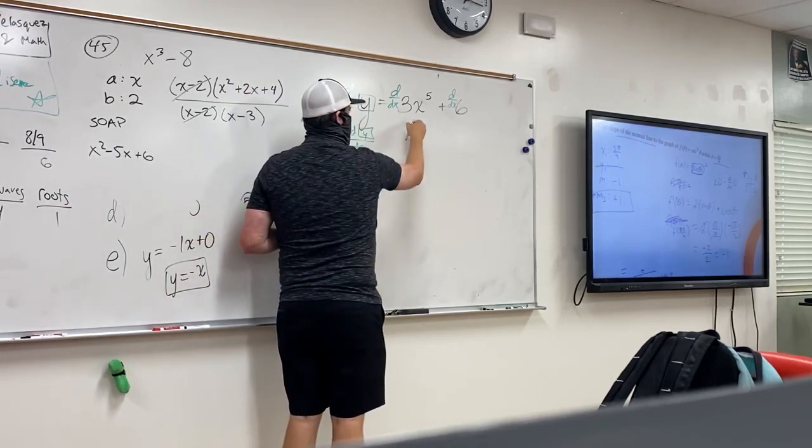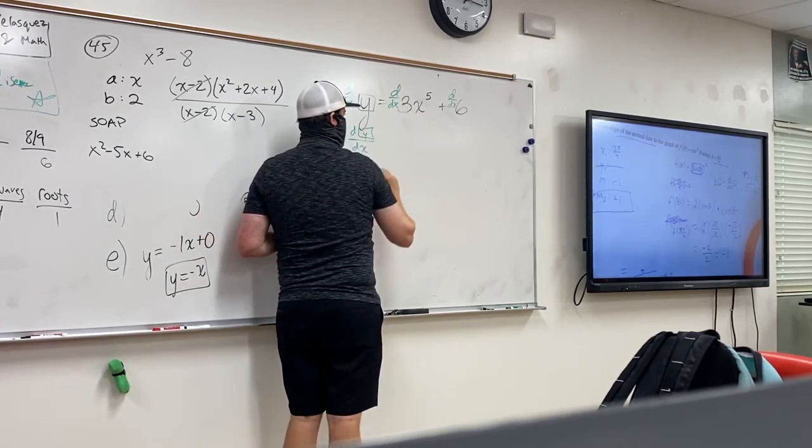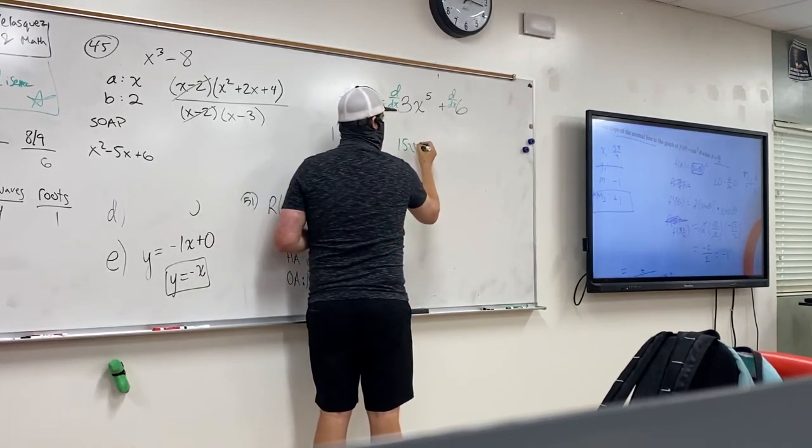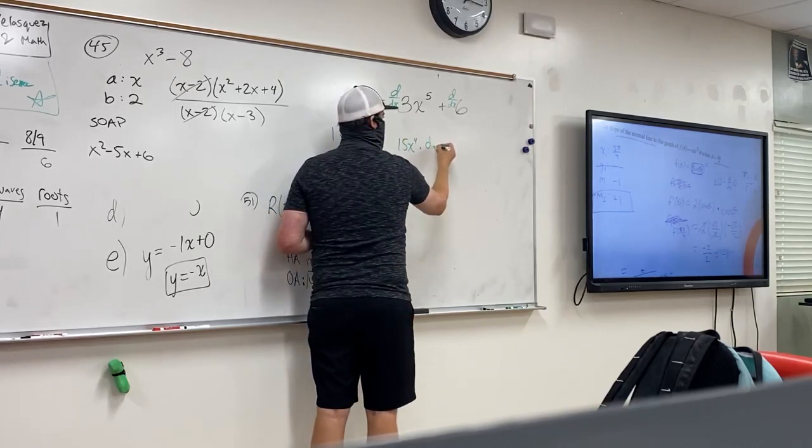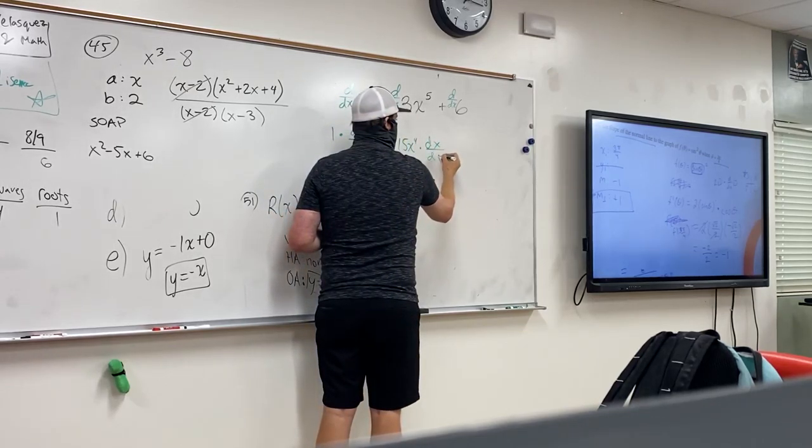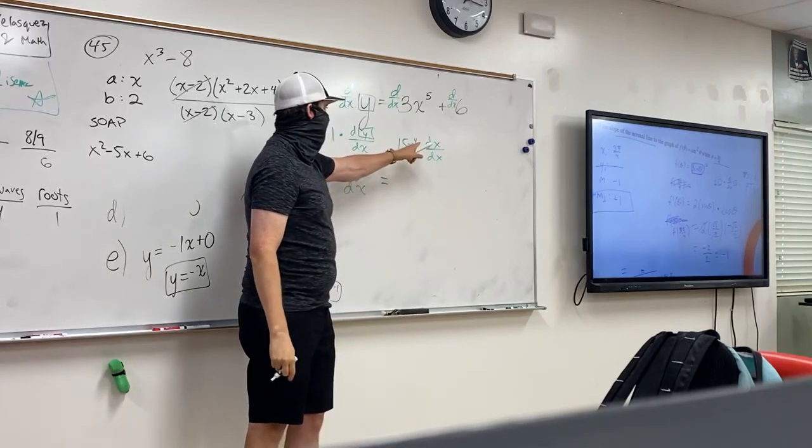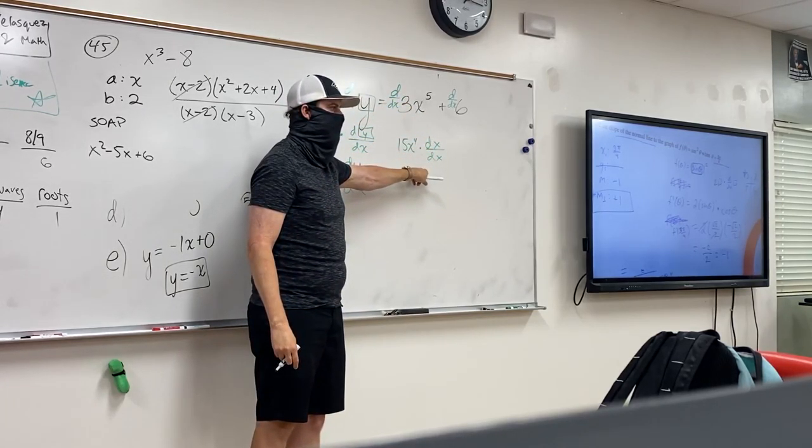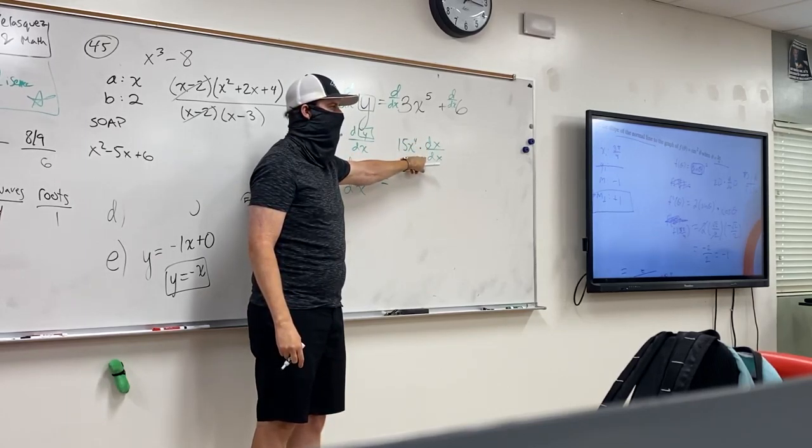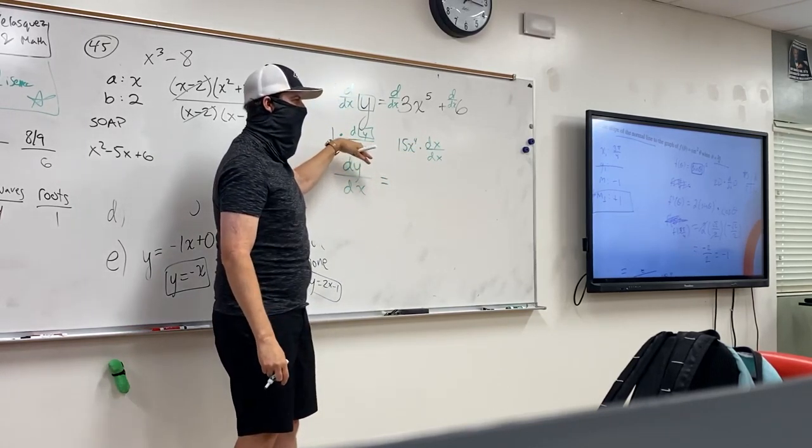What's the derivative of 3x^5? 15x^4. But technically it's actually times dx/dx. The derivative of what variable did I choose? I chose an x variable with respect to x. Well, what's anything over itself? One. So this would have been a waste of time to write every time.